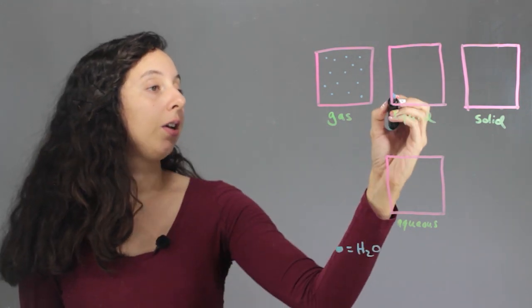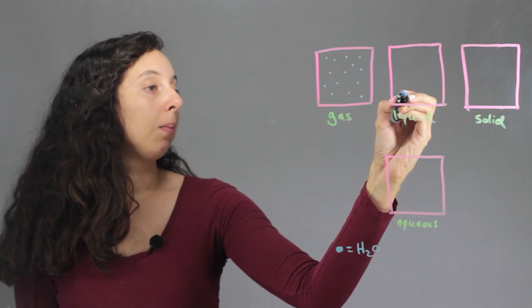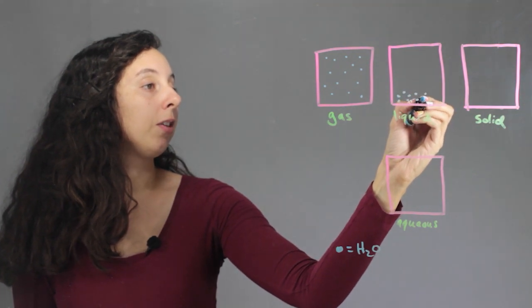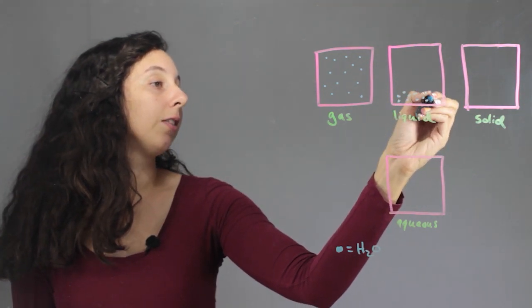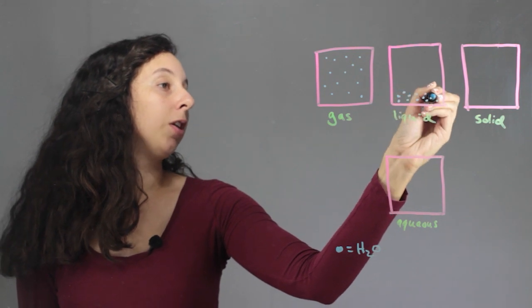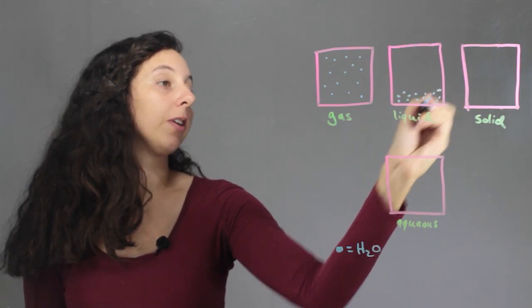And in liquid, they're connected to each other, but they can move around and they're not stuck. They can move however they want to, and they'll form the shape of the container.